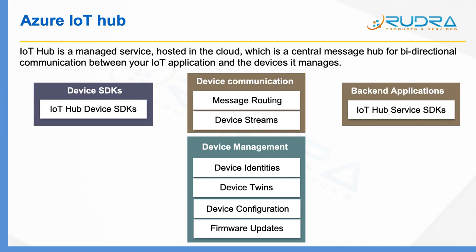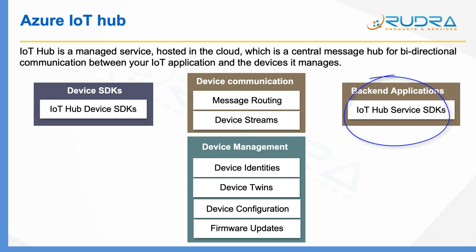In the SDKs area, you have two types of SDKs available with Azure IoT Hub. First one is device SDKs — using these, you can develop applications and deploy them on devices. The second SDK type is service SDKs — using these, your backend applications can interact with IoT Hub. Either you can develop applications from scratch using service SDKs, or you can enhance existing applications so they will interact with IoT Hub.